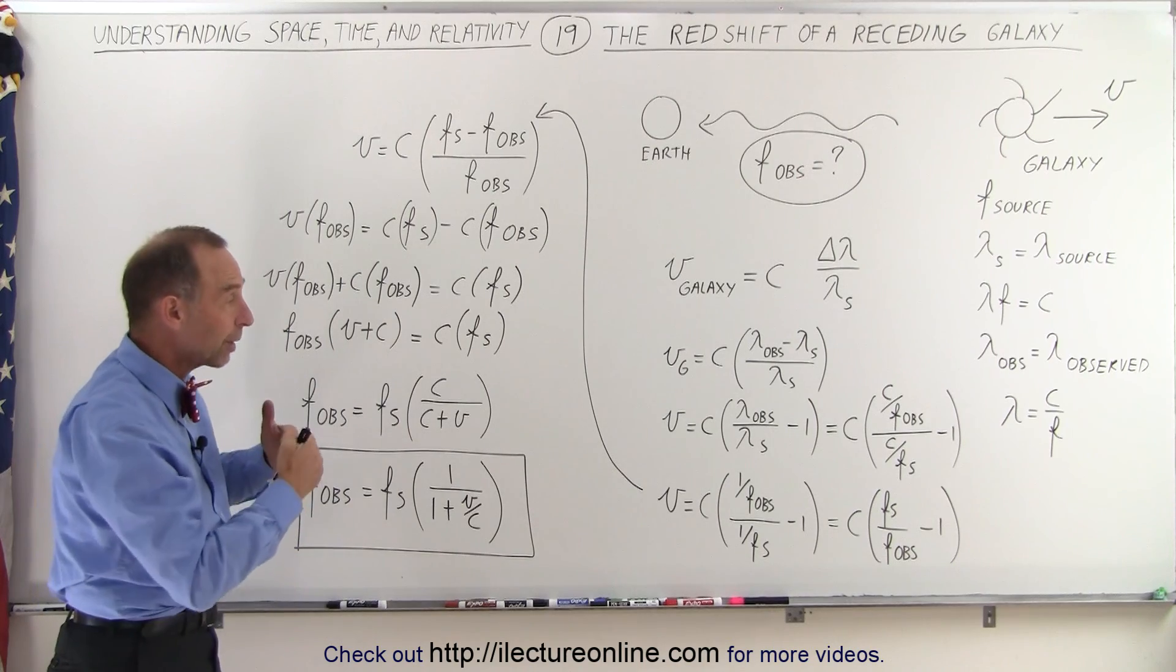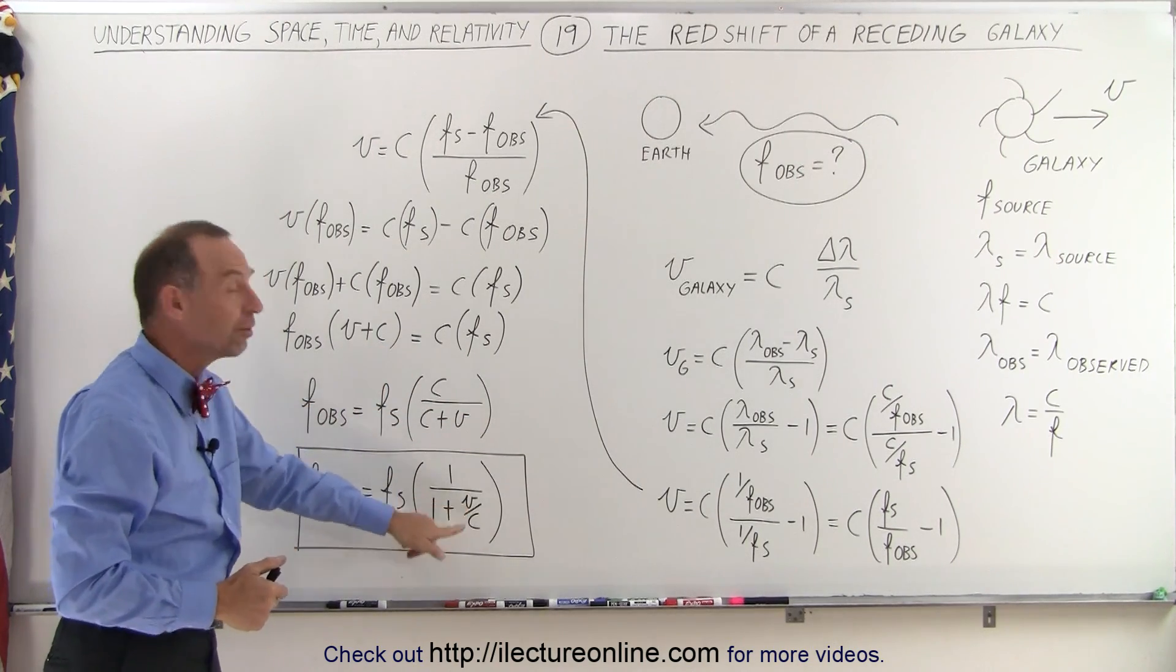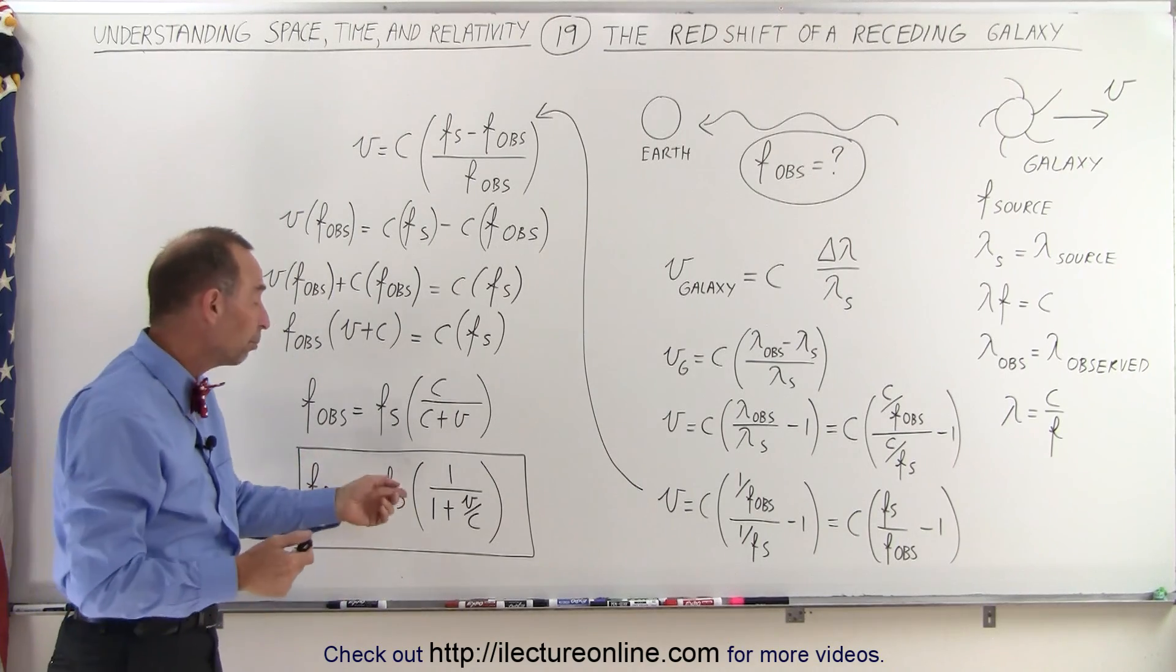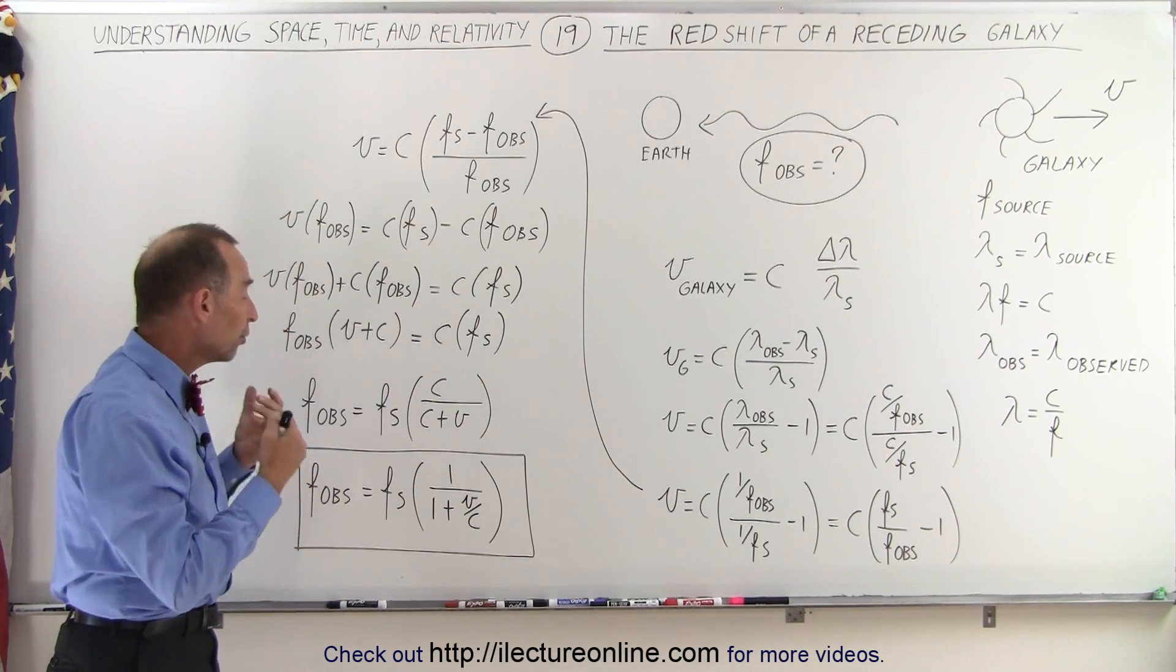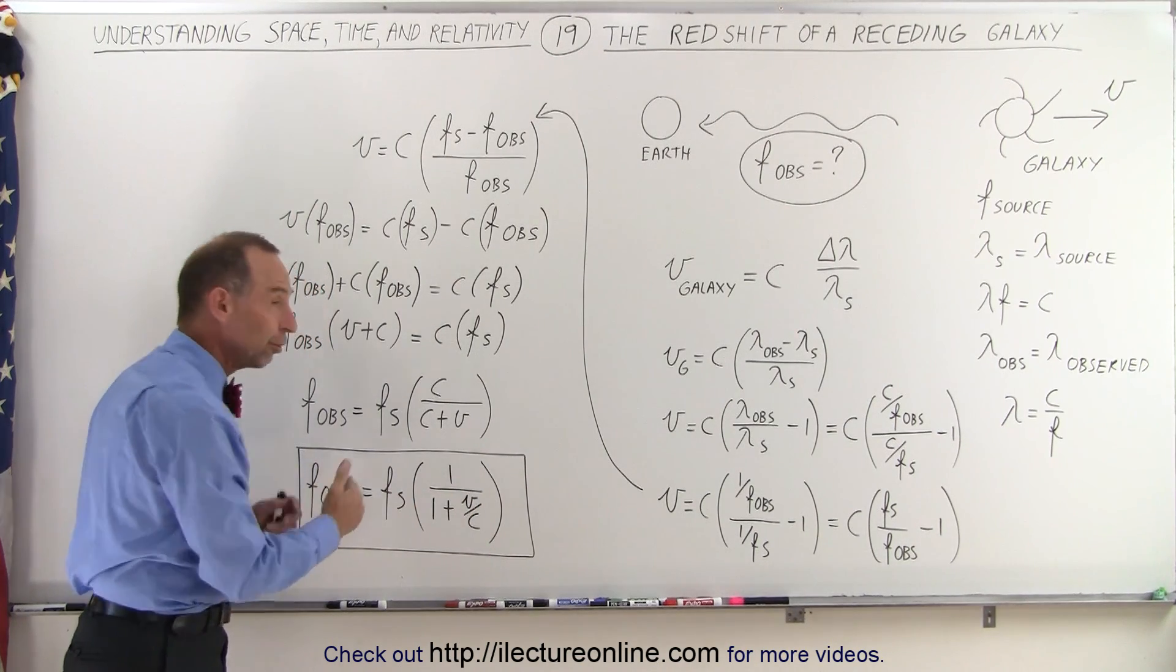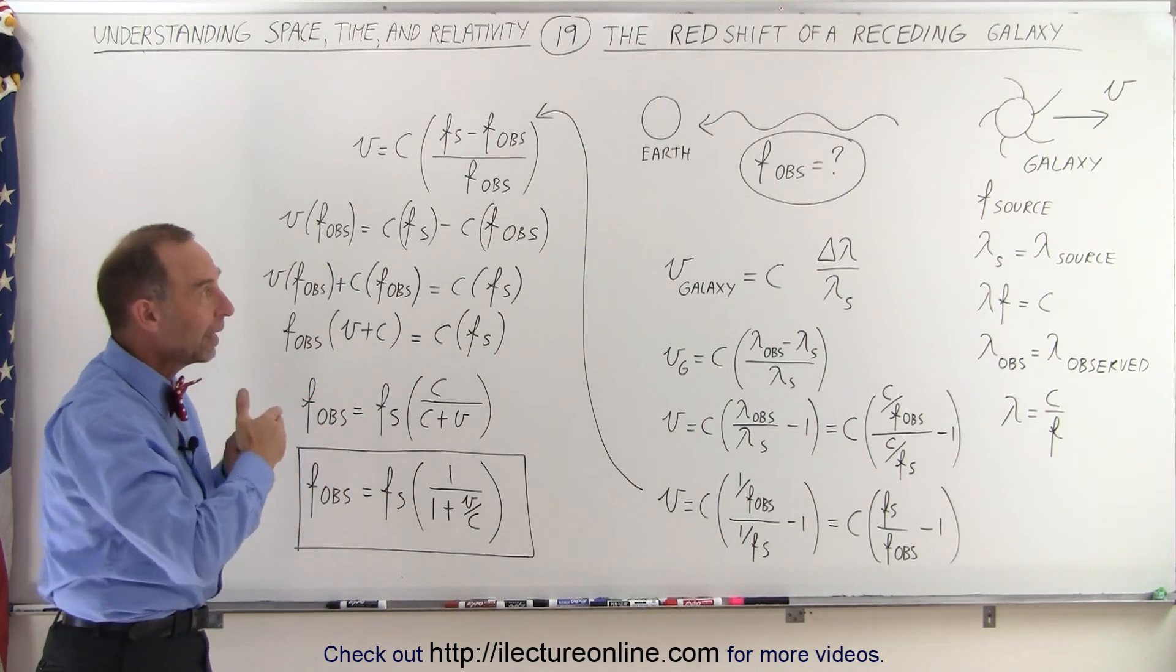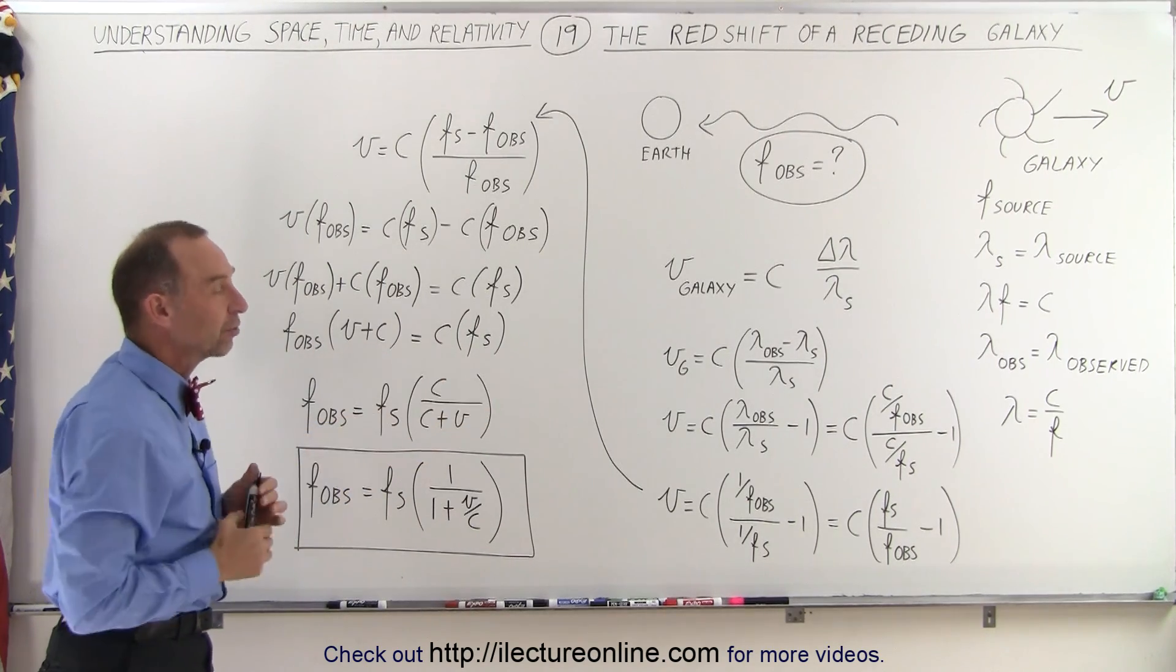Now remember, when we talk about the blue shifting as the galaxy is approaching us, this became 1 minus V over C, and now we have 1 plus V over C in the denominator, which means as the velocity increases, the denominator gets bigger, and the frequency observed becomes smaller. So the frequency continues to drop as the object moves faster away from us.